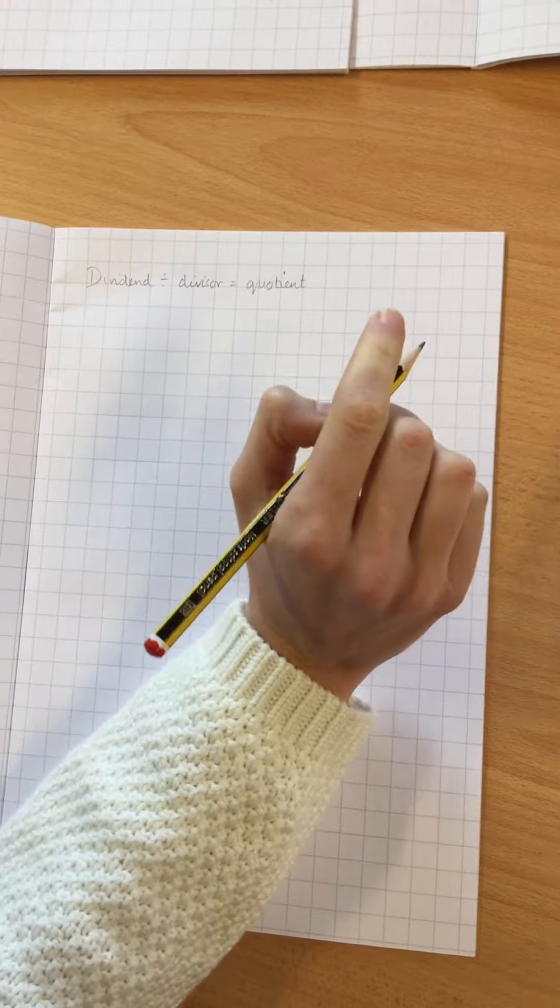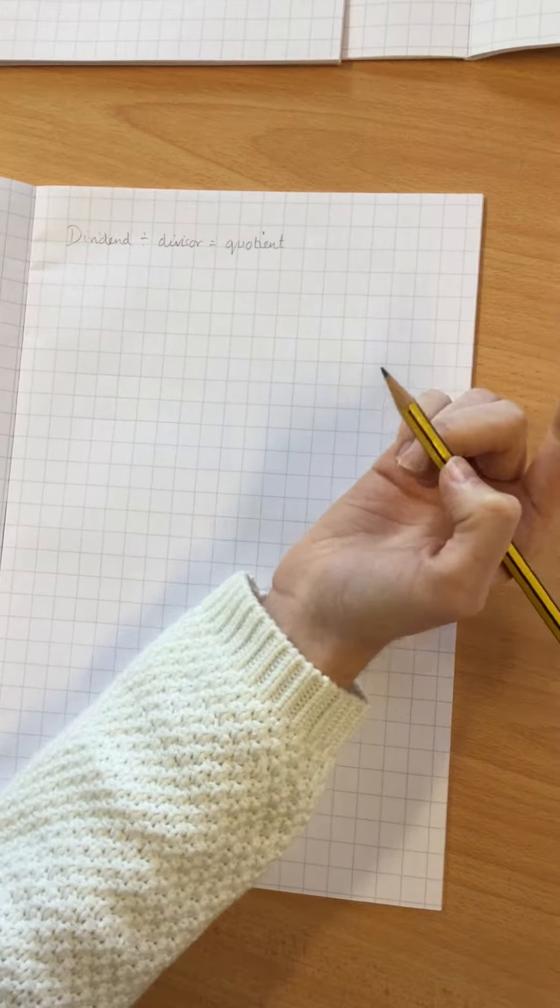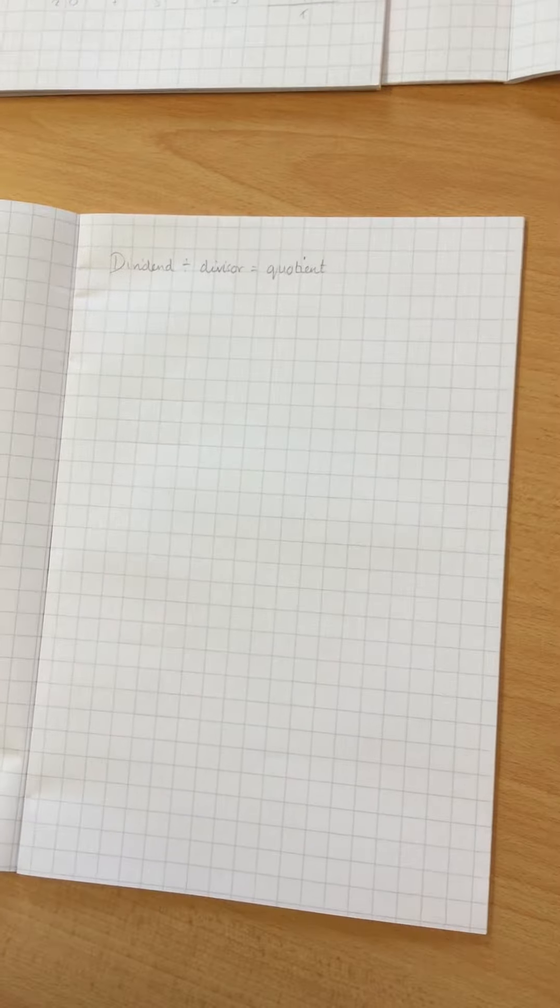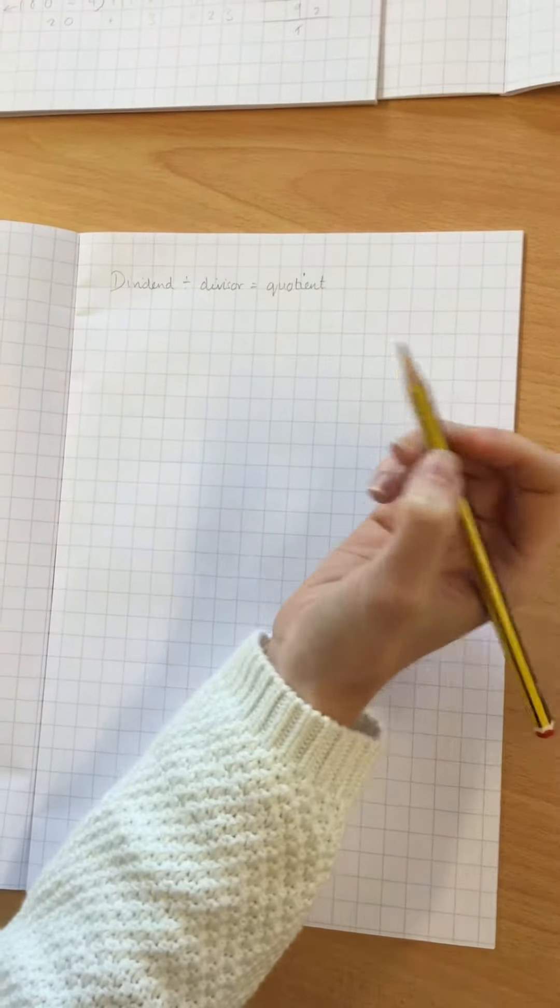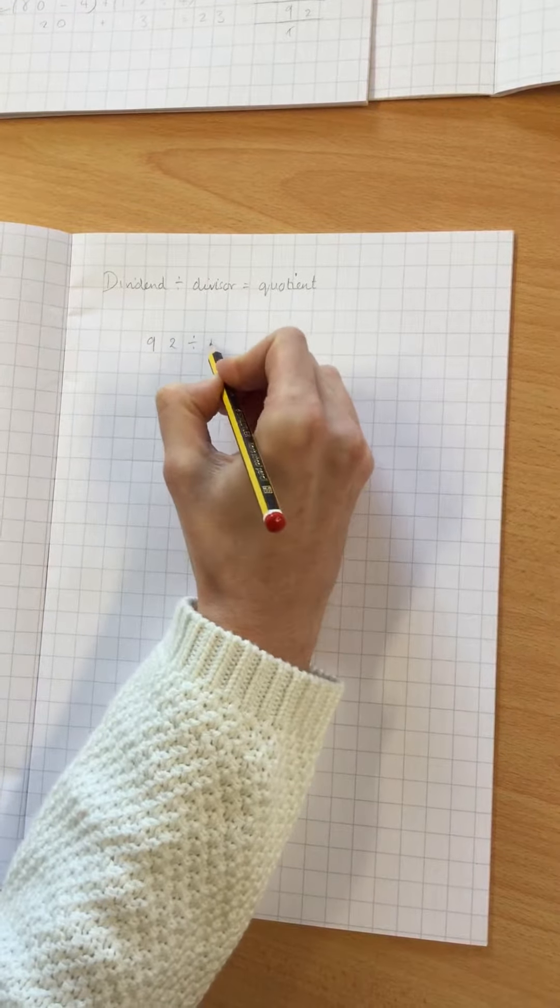There are lots of different ways of doing this. The first method, which both year 3s and year 4s use, is partitioning and the distributive law that we looked at in multiplication earlier. For example, if I wanted to do 92 divided by 4.